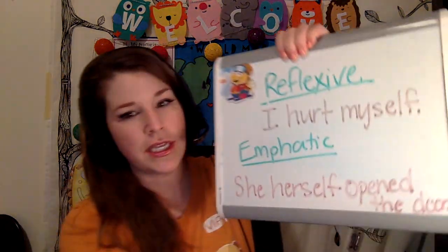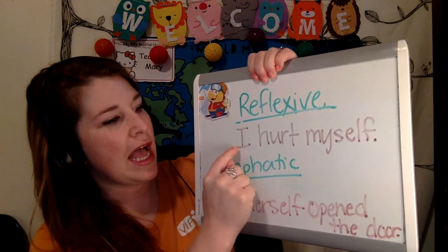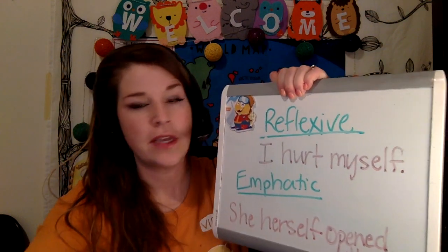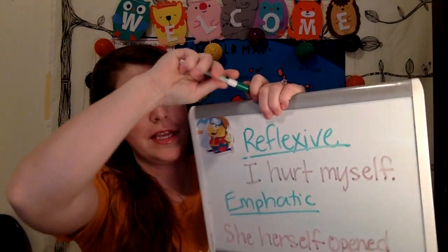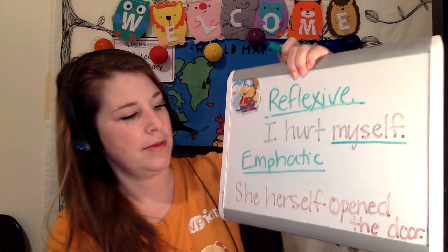Reflexive and emphatic pronouns use words like himself, herself, myself in sentences. Reflexive is where the sentence looks like 'I hurt myself' — here 'I' is the pronoun and 'myself' reflects back to it.